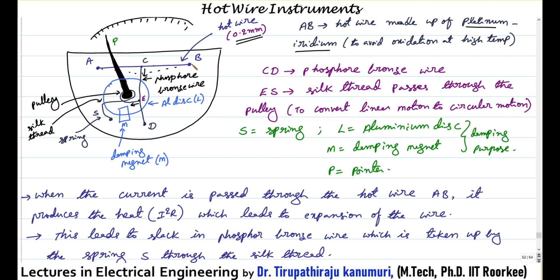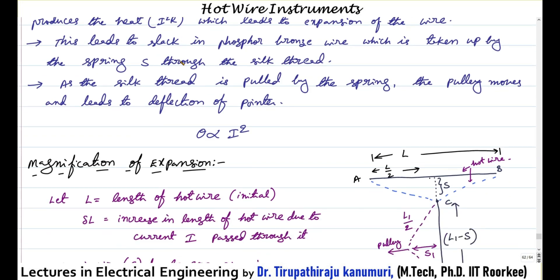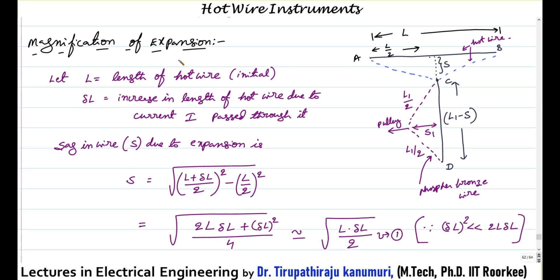The temperature is raised due to I square R loss, and whatever expansion came is proportional to the RMS value of the current — current squared — that is why this can be used for both AC and DC. Now let us see how the magnification factor comes. Between points A and B, the hot wire is connected. Whenever current is passed through this wire, it will start expanding — the dotted line indicates the hot wire after expansion.